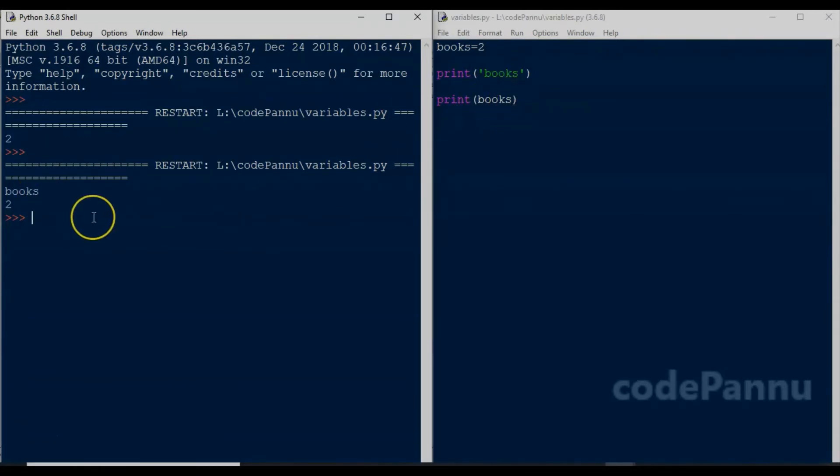But when you remove the single quotes, Python will look for a variable called books and if that variable is already available in the memory, it will print the value.